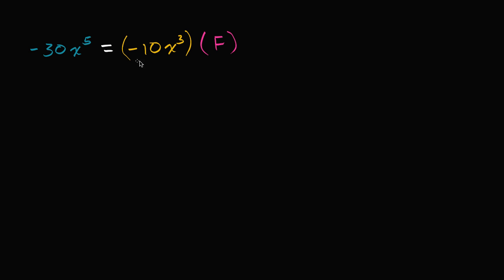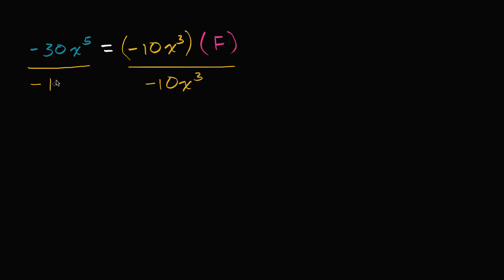The way that we can tackle it is to isolate f on the right-hand side by dividing by negative 10x to the third. We want to divide this side by negative 10x to the third. But if we want the equality to be true — if we want the left side to stay the same as the right side — whatever we do to the right side, we have to do to the left side as well. So we have to divide the left side by negative 10x to the third.